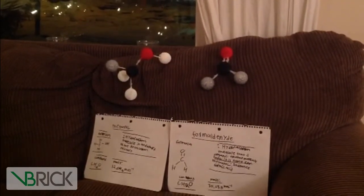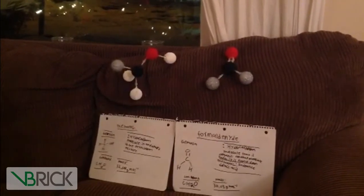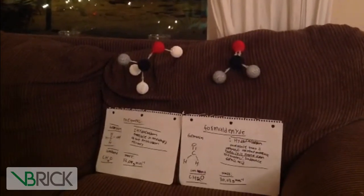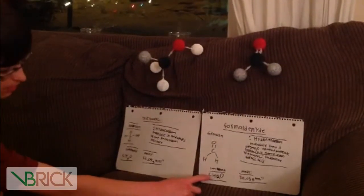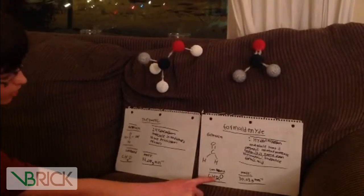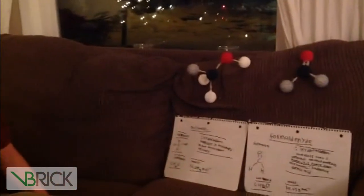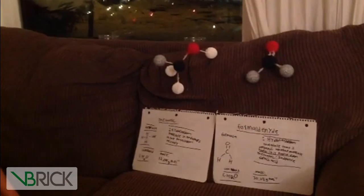The formula for formatoiline is one oxygen atom, one carbon atom, and two hydrogen atoms. The mass is 30.03 grams per mole negative one.